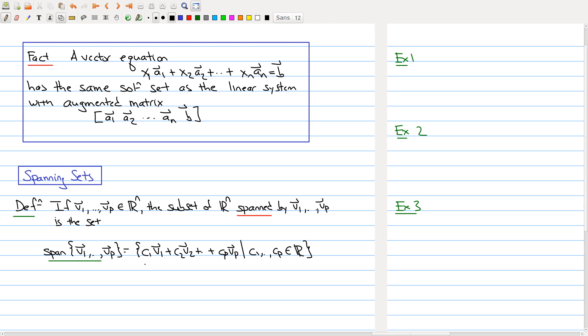The vectors on the second side are c1 times the first vector plus c2 times the second vector up to cp times the last vector, where c1 through cp are elements of R. Notice that a particular element inside of here is a linear combination. In particular, the span contains all linear combinations of v1 through vp, not just one but all of them.